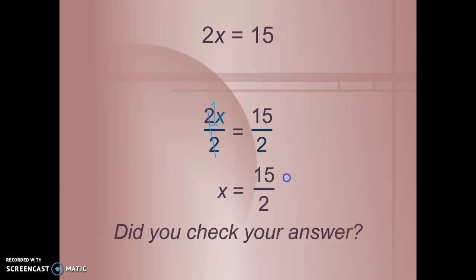To check our answer, we would take this and plug it back into the original equation, which was 2x plus 6 equals 21. Check your work and see if you get that. 2 times 15 over 2 plus 6 equals 21. 2 times 15 over 2 is just 15 plus 6 equals 21, and we get 21 equals 21. That is a true statement, which means our answer is correct.